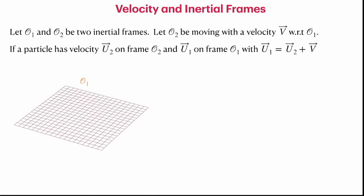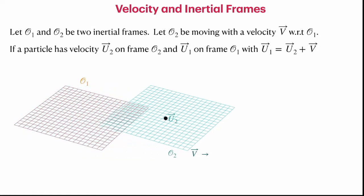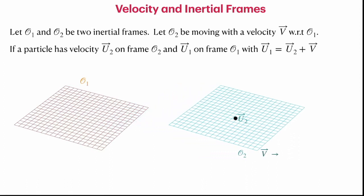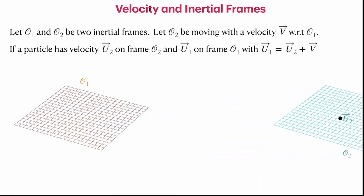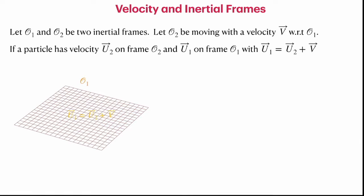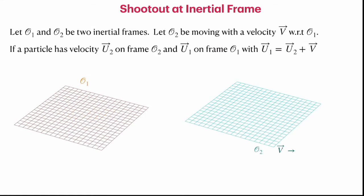Let's see this more pictorially. We have frame O1 at rest and frame O2 moving with velocity v in some arbitrary direction. A particle moving at speed U2 in frame O2 is observed by frame O1 to have velocity U1, which equals U2 plus v. This is how velocity addition works between two inertial observers in Newtonian mechanics.